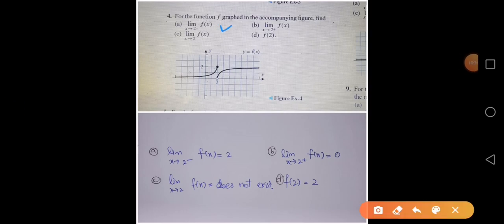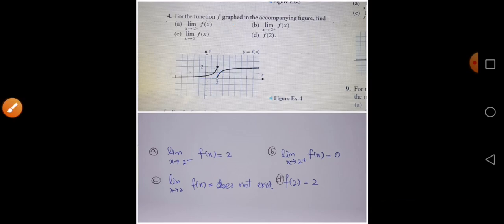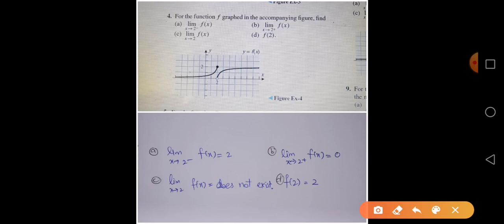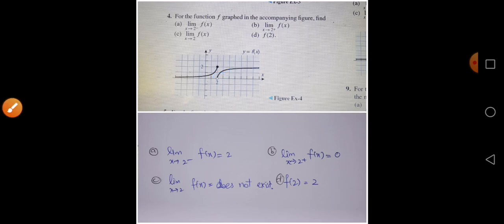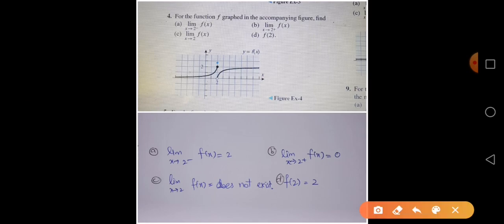Question 4: for lim(x→2⁻) — approaching 2 from the left — the graph gets closer and closer to 2, so the left-hand limit equals 2. For lim(x→2⁺) — approaching 2 from the right — the graph approaches 0, so the right-hand limit equals 0. Since the one-sided limits are not equal, the two-sided limit does not exist. The functional value g(2) = 2 because there is a filled dot at x = 2.